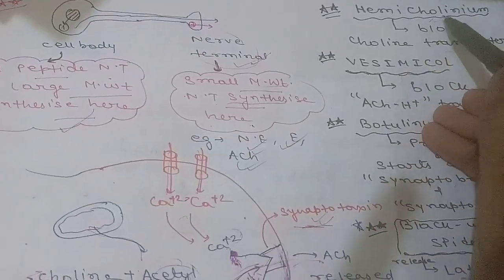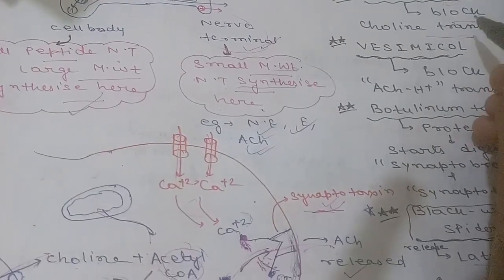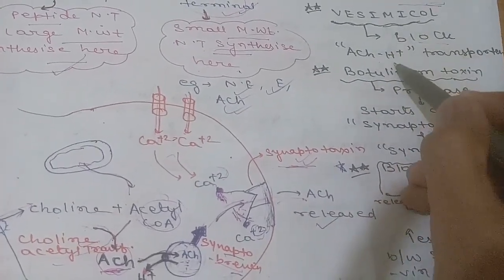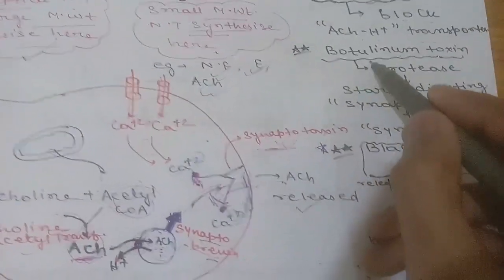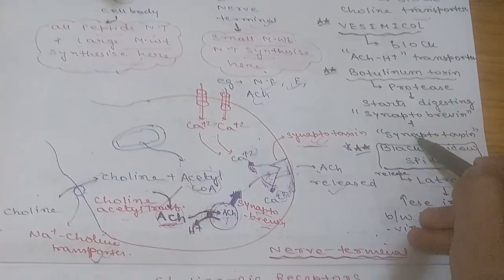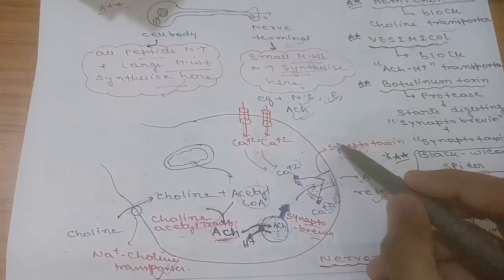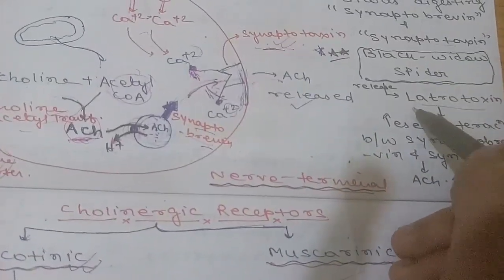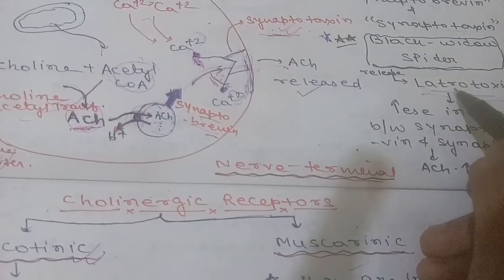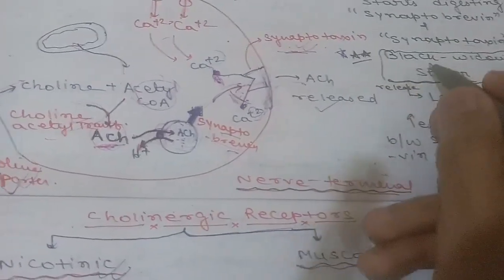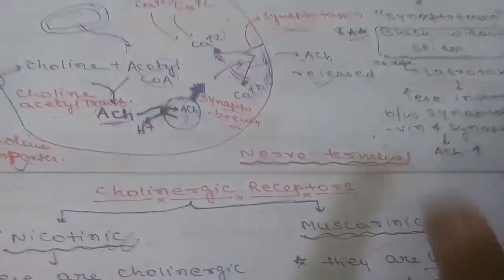Drugs blocking this pathway include: hemicholinium, which blocks the choline transporter; vesamicol, which blocks the vesicular ACh/H⁺ transporter; botulinum toxin, a protease that digests synaptobrevin and syntaxin proteins, preventing release; and alpha-latrotoxin from the black widow spider, which increases interaction between synaptobrevin and syntaxin, causing excessive acetylcholine release.